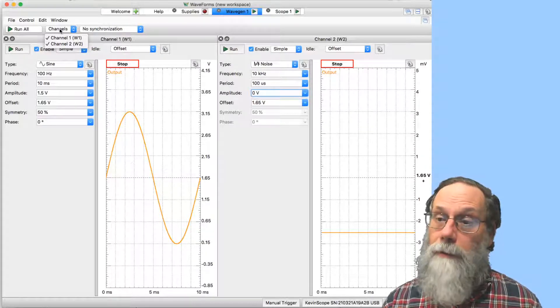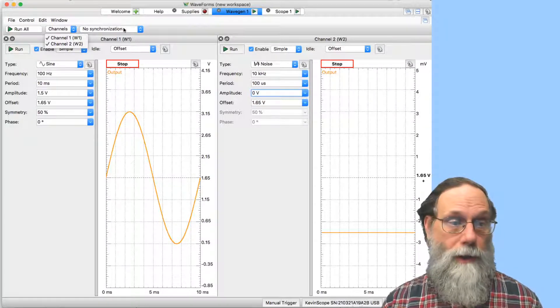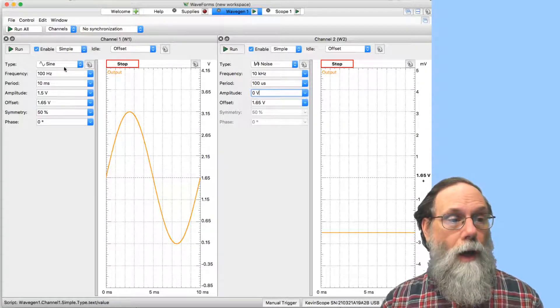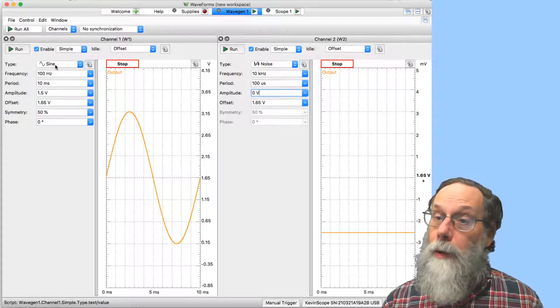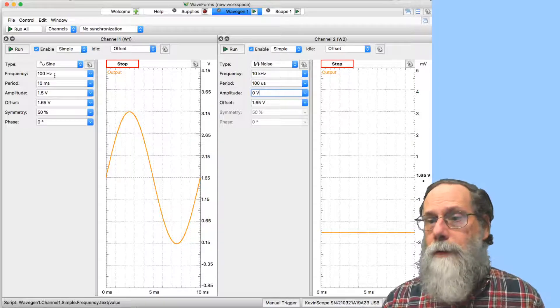Waveform generator 1 is going to be my sine wave, and waveform generator 2 is going to be my noise signal. So sine wave for waveform generator 1. Here I'm picking 100 hertz, which is a fairly slow signal. If I was trying to record this with Teradac, I might want to go even slower.